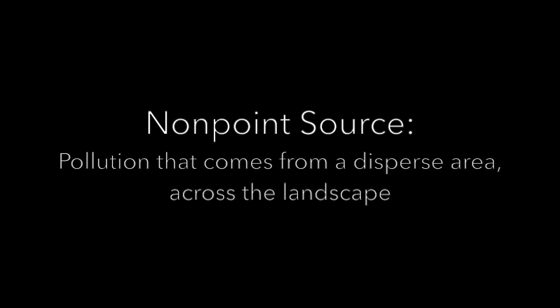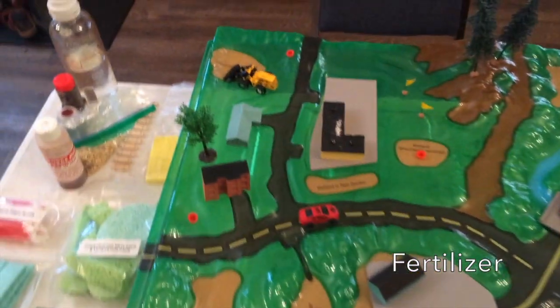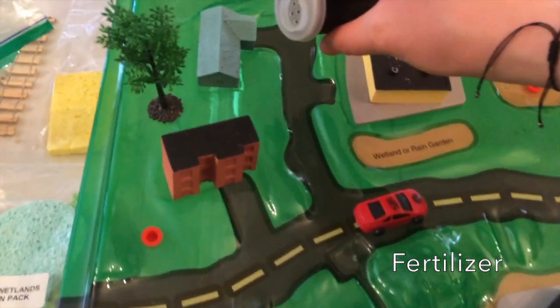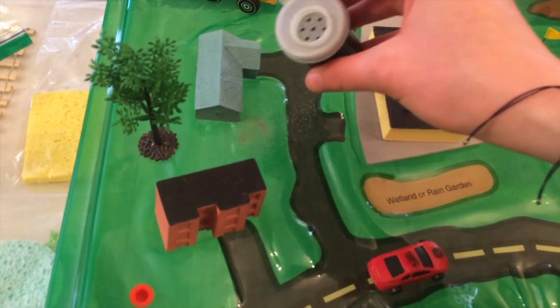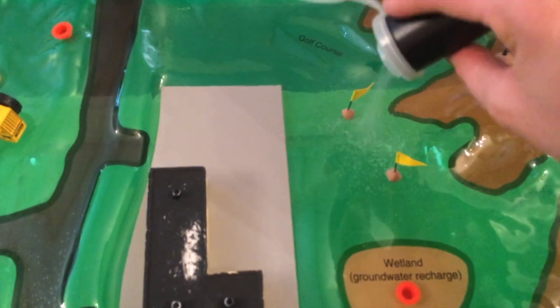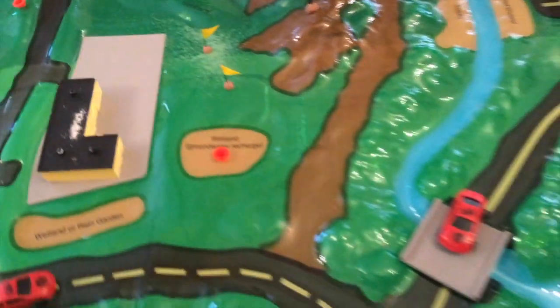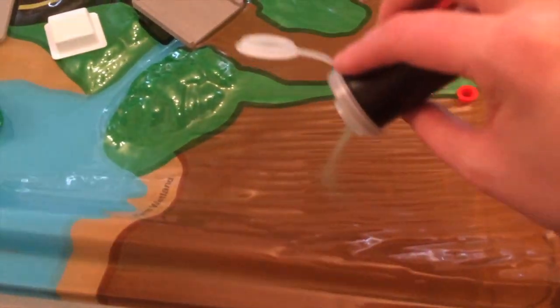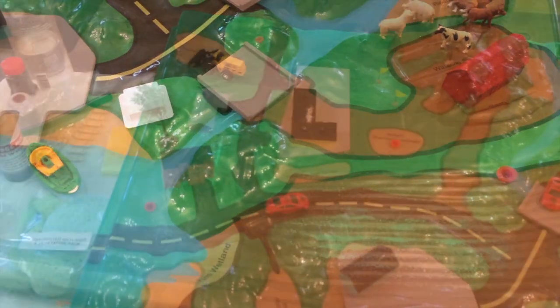The next source of pollution we're going to find in our watershed is called non-point source pollution. This is pollution that comes from a dispersed area across the landscape, making it a lot harder to identify the exact source of the pollution. There are a lot of different human activities that contribute to this. Our first pollutant is going to be fertilizer. We might find this on our residential lawns to help keep the grass green, also over in our golf course area, and then in our agricultural and crop area to help plants grow.